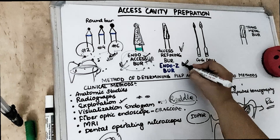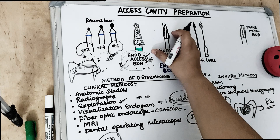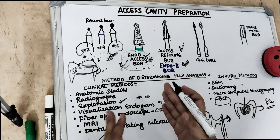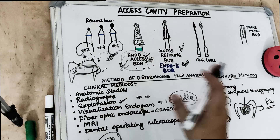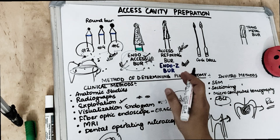After the endo access bur, we use the access-refining Endo-Z bur, a safety-tip tapered bur also from Dentsply. This bur has a non-cutting tip but cutting sides, preventing perforation while widening the pulp chamber walls. The non-cutting tip prevents perforating the pulpal floor while the cutting shank enlarges the pulp chamber.